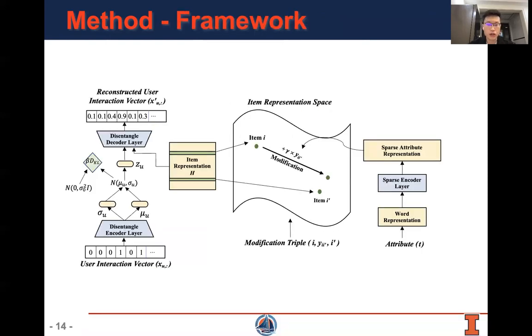This is the framework of CGR. The left part is designed based on variational autoencoder. It will learn disentangled item representation. The right part will learn a sparse attribute representation, and in the middle part, the sparse attribute representation will be aligned with the item representation. In the middle part, the item relation data will also be used as weakly supervision signal to help the disentanglement.